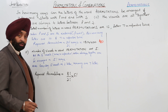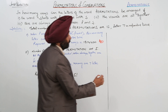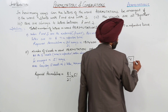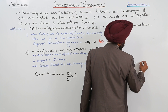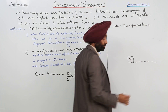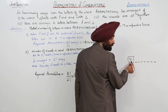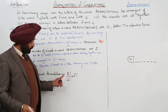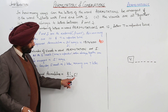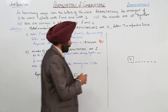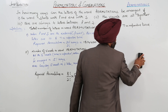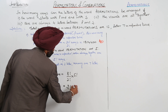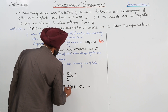Why 8? Because the 5 vowels together count as 1 unit, and the remaining 7 letters give us 8 total units. T is repeated, so we divide by 2 factorial. Times 5 factorial for the vowels. After solving, this equals 2,419,200. That is the answer for the second part.